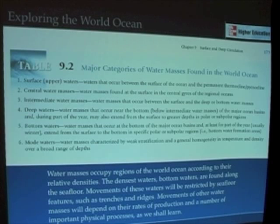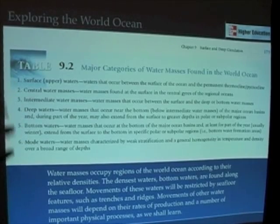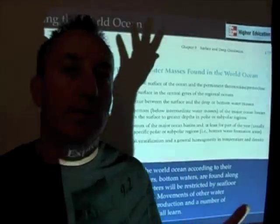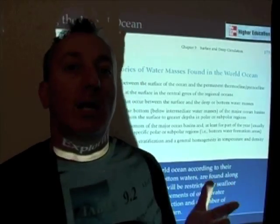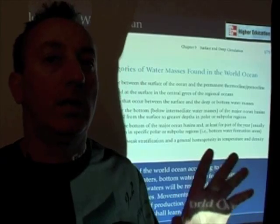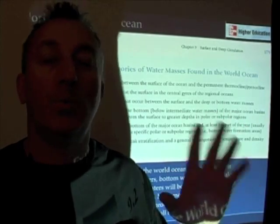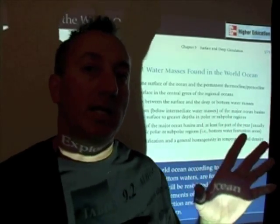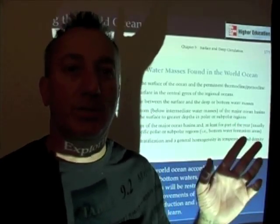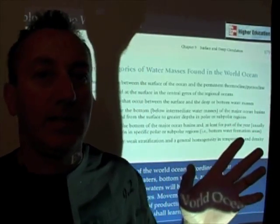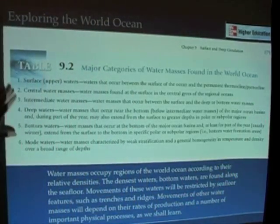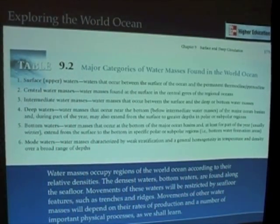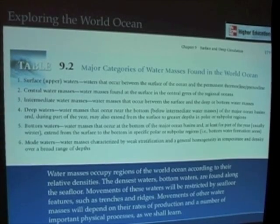If you take a look at Table 9-2 in the book, it gives you six major categories of water masses in the world ocean. This last one is new in the sense that it's gotten a lot more recognition in the oceanographic community beyond just physical oceanographers, and it's an additional one not typically found in oceanography textbooks. But these are the categories of water masses found in the world ocean.